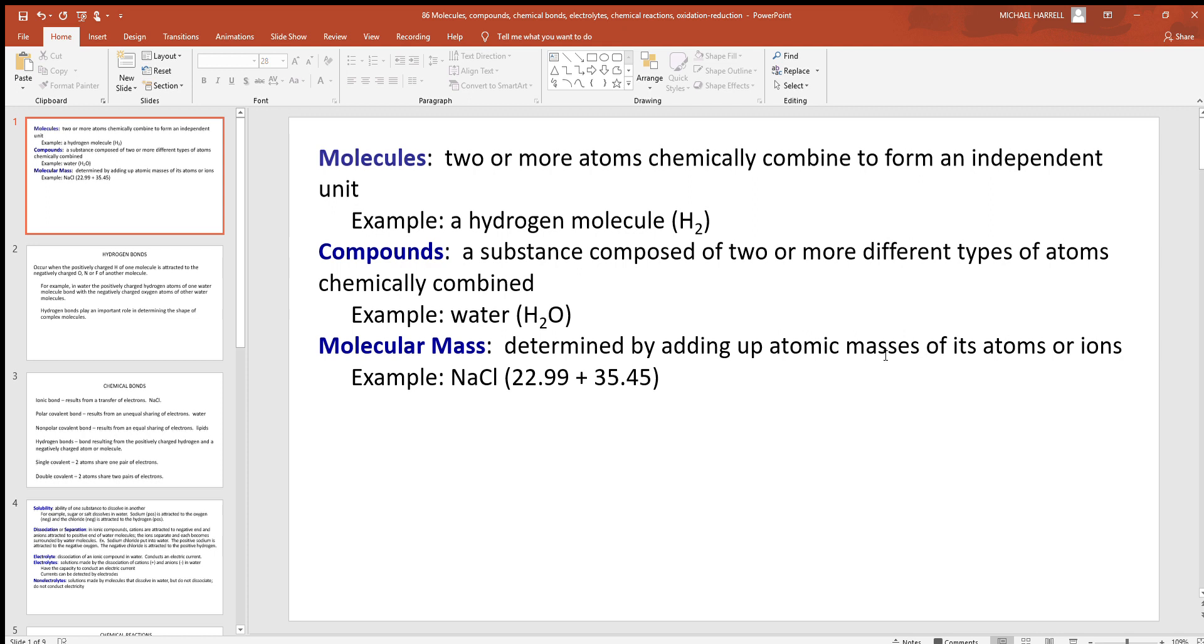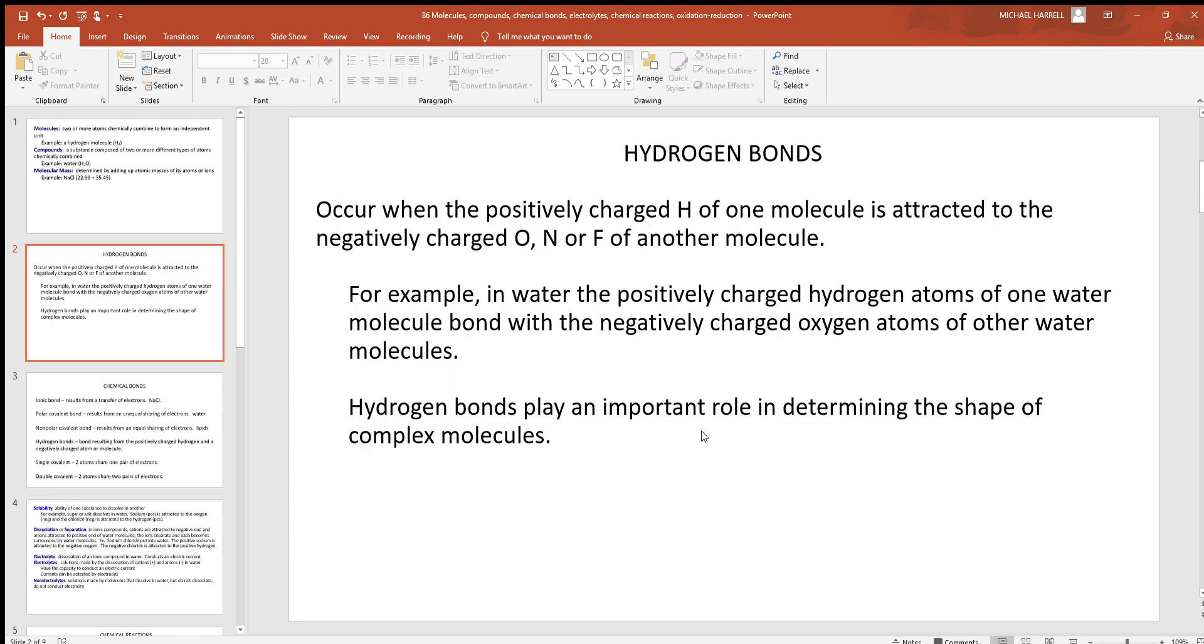You get two different types of atoms there chemically combined with each other. And if you need to know the molecular mass of some type of compound, all you need to do is add up the masses of the individual atoms. So a simple example of that with sodium chloride here, you just take the numbers given right here, which are the masses of these individual atoms. Sodium with 22.99, chloride with 35.45, add them together. That would be the molecular mass of that particular compound.